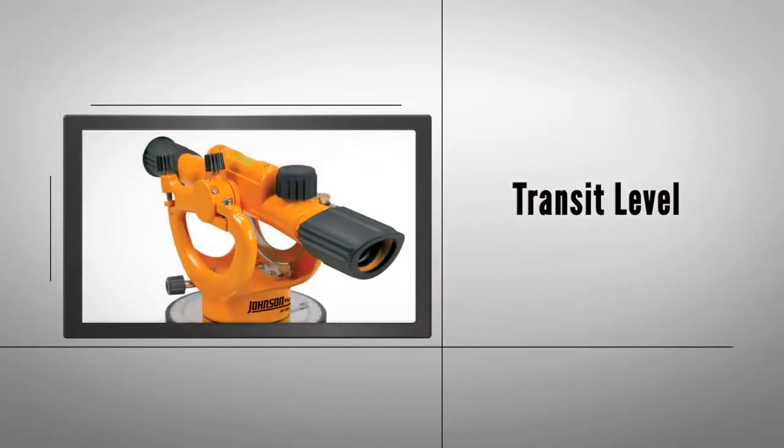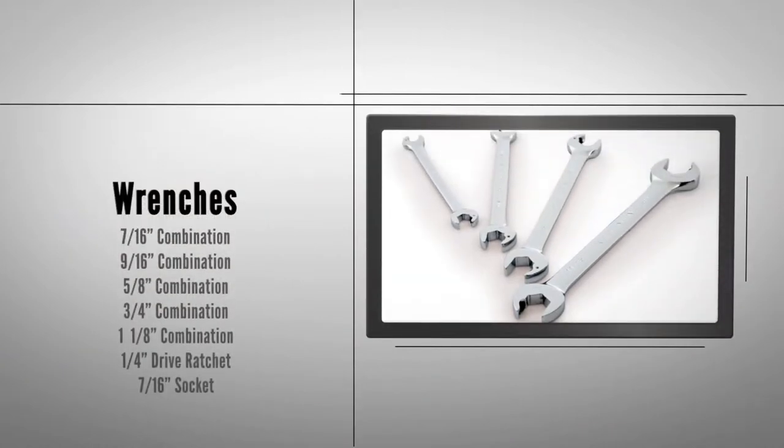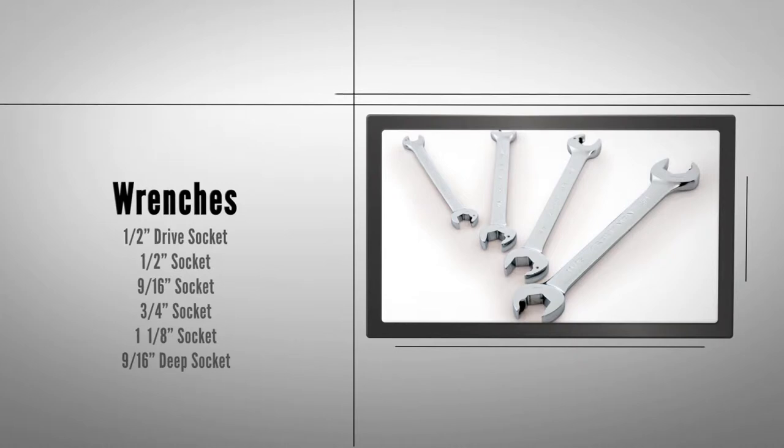Transit level, wrenches 7/16 combination, 9/16 combination, 5/8 combination, 3/4 combination, 1-1/8 combination. On large doors, 1/4 drive ratchet with 7/16 socket, 1/2 drive ratchet with 1/2, 9/16, 3/4, and 1-1/8 sockets. On large doors, 9/16 deep socket.